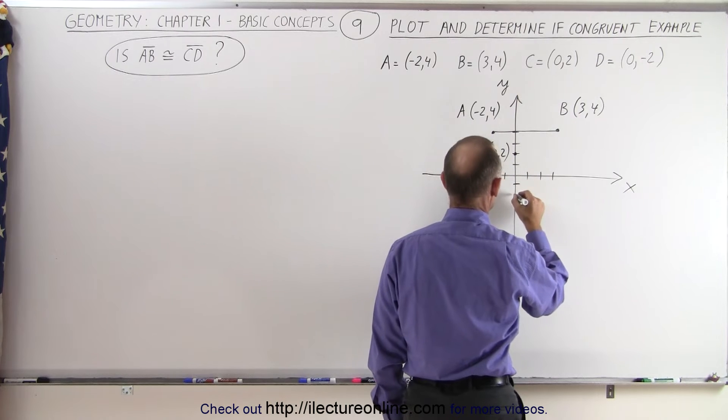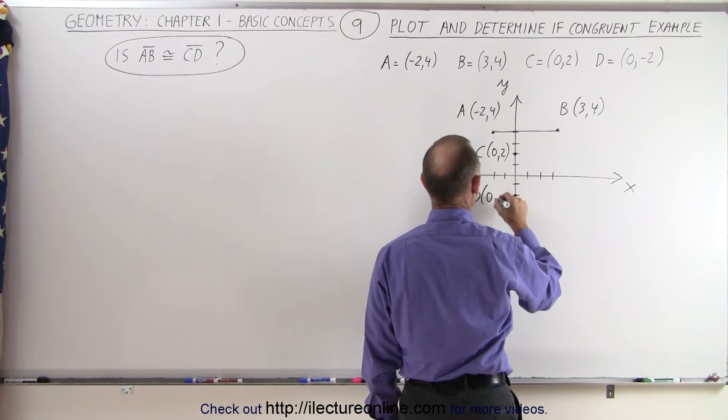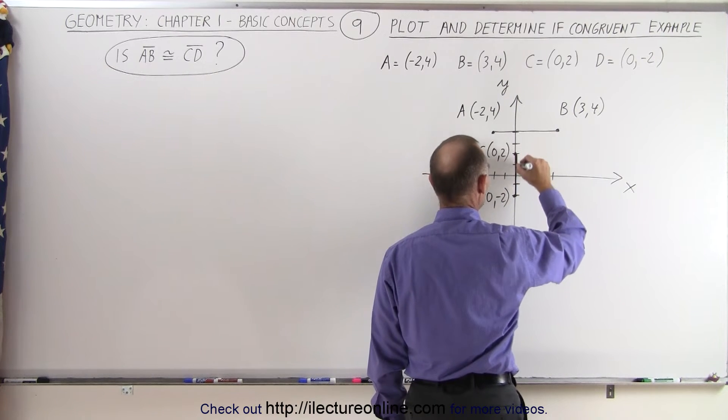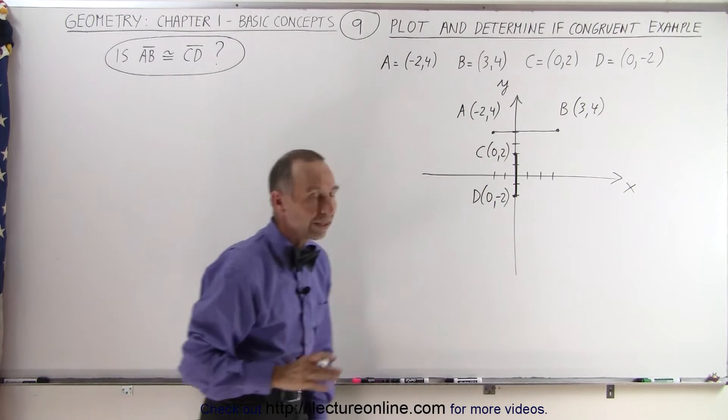So that would be negative 2, that's down here, this is D, that would be 0 and negative 2. So here's our next line segment, which is right on top of the y-axis. So there's our two line segments, AB and CD.